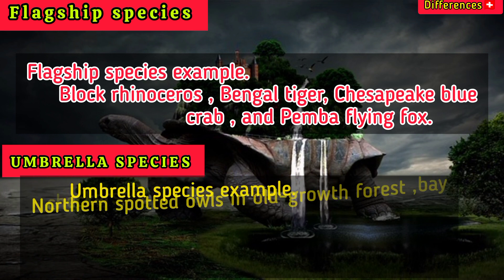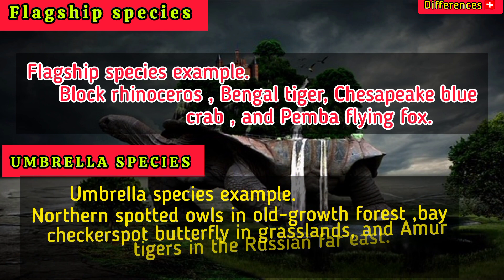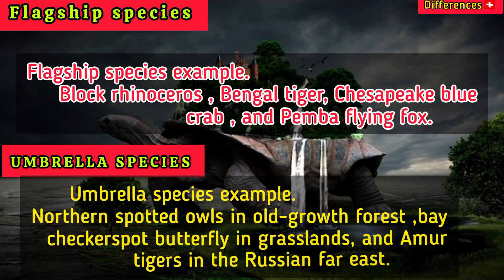Examples of umbrella species include the northern spotted owl in old-growth forests, the bay checkerspot butterfly in grasslands, and the Amur tiger in the Russian Far East.